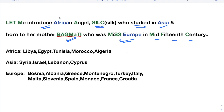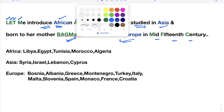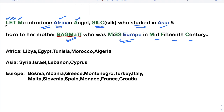First, the countries of Africa — written in blue color. 'Let me introduce' gives the letters L, E, T, M, A — these are the 5 African countries: L = Libya, E = Egypt, T = Tunisia, M = Morocco, A = Algeria. You just have to remember the first letters — that is enough to pick the correct option.